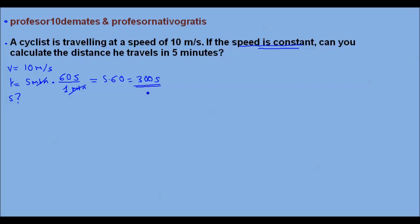OK, good. So we have now the time in seconds, and we need to know the equation for the URM, the Uniform Rectilinear Motion. We know it's a Uniform Rectilinear Motion because the question says the speed is constant.